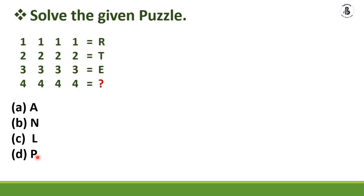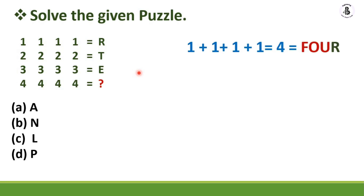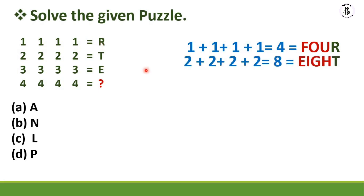To solve these problems, I will give 10 seconds to you. Now for solving, you should think in a different manner. If I use these relations: 1 plus 1 plus 1 plus 1 equals 4. If I write 4 in text form: F, O, U, R — and the last alphabet R is representing here. So the last letter of the number's word equals the result. Following the same pattern: 2 plus 2 plus 2 plus 2 plus 2 equals 8. Written as E, I, G, H, T — the final letter is T.